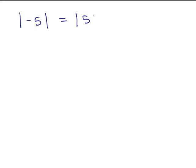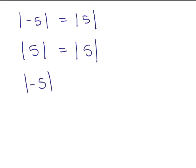Before doing that, consider that the absolute value of negative 5 is really the same thing as the absolute value of 5. When you take the absolute value of negative 5 and the absolute value of 5, both equal 5. So you could have the absolute value of 5 equals the absolute value of 5, or the absolute value of negative 5 equals the absolute value of negative 5.